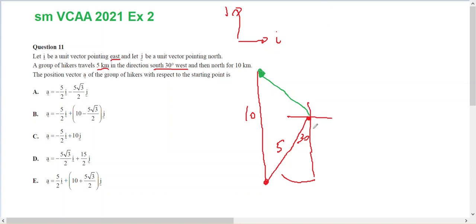So I can break my five into a vector in the j which will be five cos of 30 and a vector in the i which will be five sine of 30. That's five root three on two, that's five on two.